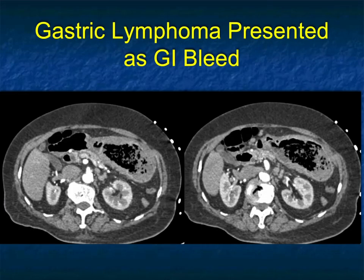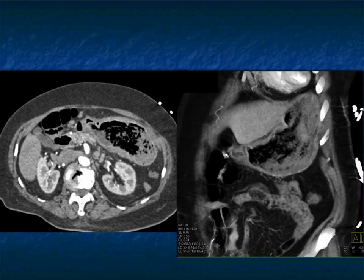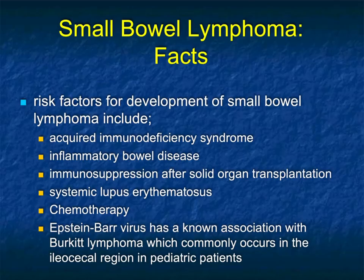Another example: a patient with GI bleed. In the fundus and body, the stomach is markedly thickened compared to the antrum, with some antral involvement and mottled material in the stomach — this was also gastric lymphoma, nicely shown on the coronal view as well.